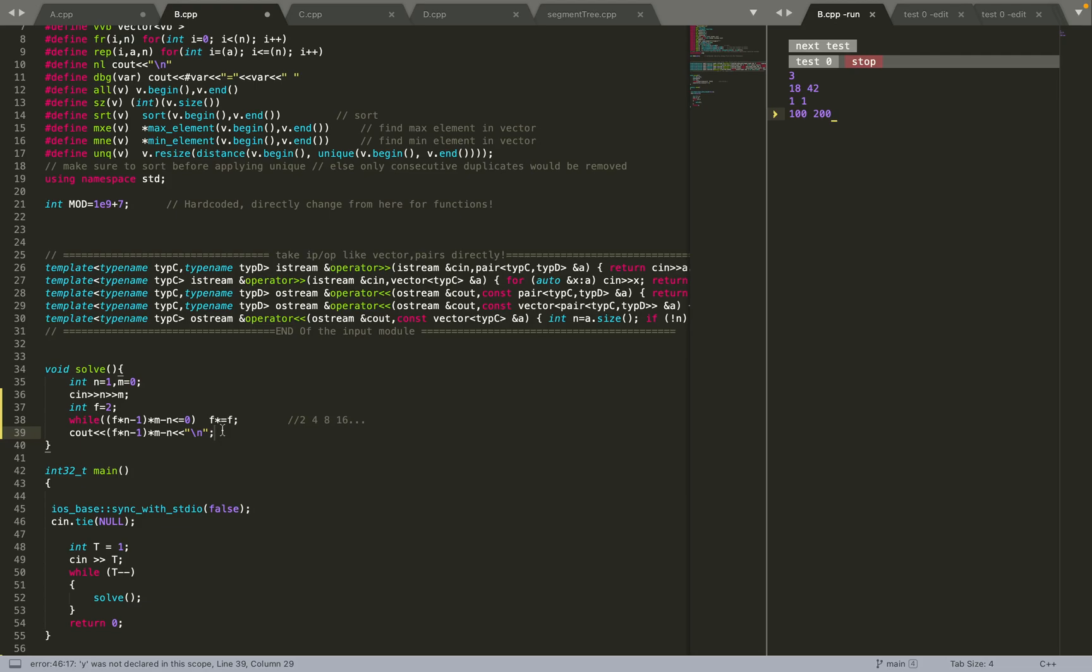Whenever you are doing such questions, where you have a hint that mathematics would be involved, it is best to take a pen and paper, try to solve it, try to come up with an equation. Once you are sure about it, double check that if you are doing a mistake or not. What I was doing is when I was subtracting one, I was subtracting it before the multiplication itself. Hence, the answer was getting wrong.